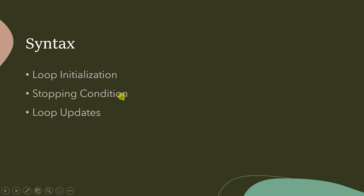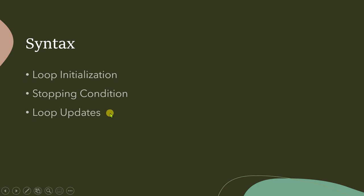The whole body of the loop will be executed until the stopping condition becomes false. The loop update is a statement inside the loop body that is executed in each iteration and changes the stopping condition from true to false. Now, how are these three statements written in a for loop?